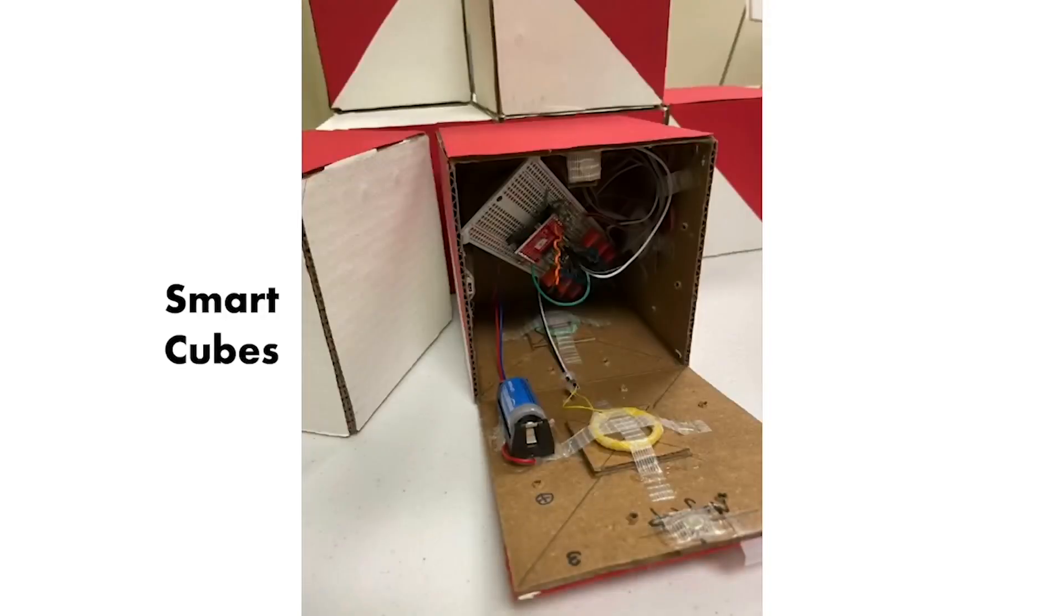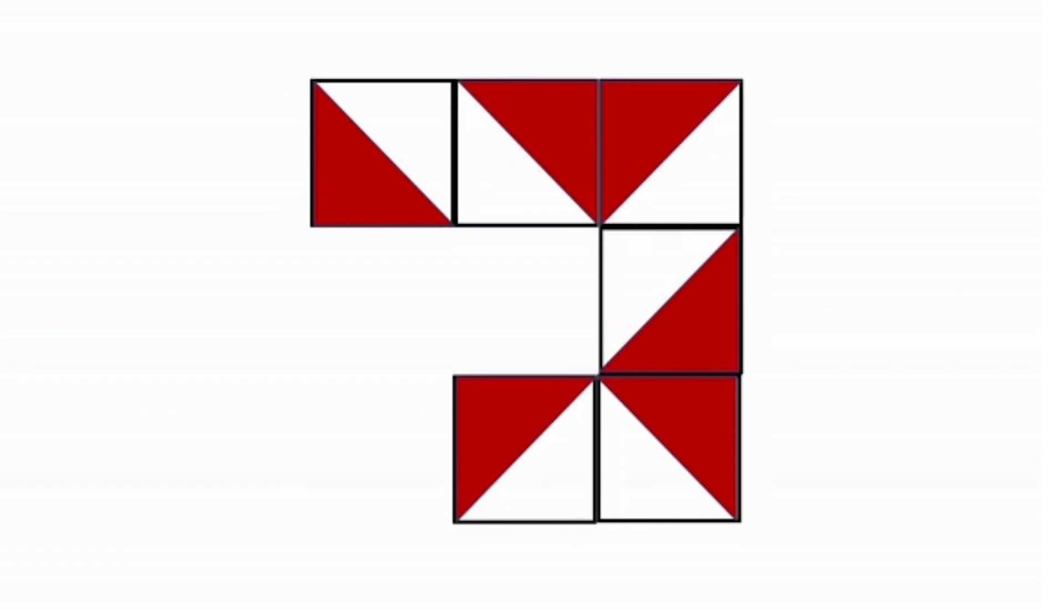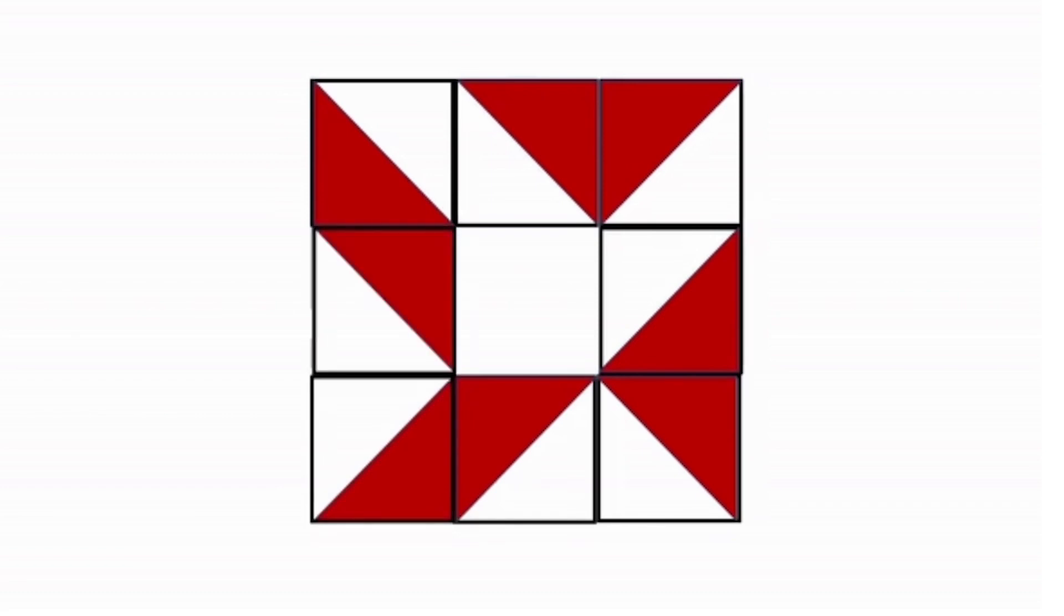My team has collaborated with engineers from Michigan State University who have created these cubes, we call them smart cubes, that have sensors in the inside so they can detect when they're placed next to another block or when they're being rotated or moved. And by having people complete the block design task with a set of these cubes, we can record each action that someone makes during a task.